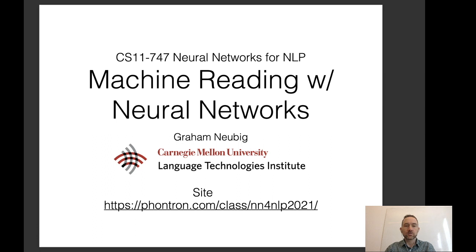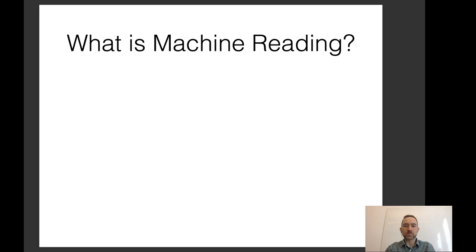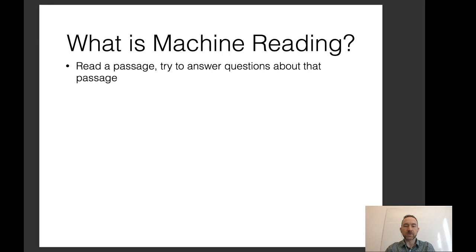Hello and welcome back to CS11747 Neural Networks for NLP. This time I'm going to be talking about machine reading with neural networks. In machine reading, essentially what we try to do is read a passage of natural language text and try to answer questions about that passage or otherwise extract useful information from it.